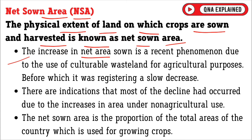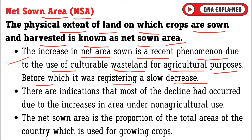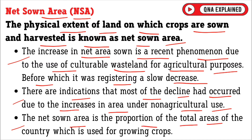The increase in net area sown is a recent phenomenon due to the use of culturable wasteland for agricultural purposes, before which it was registering a slow decrease. There are indications that most of the decline had occurred due to increases in area under non-agricultural use. The net sown area is the proportion of the total area of the country which is used for growing crops.